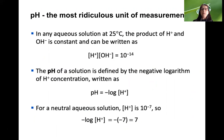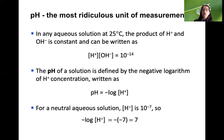The pH scale is the most ridiculous unit of measurement and it causes a lot of problems for students of science. In any aqueous solution at 25 degrees, the product of hydrogen ion concentration and hydroxyl ion concentration equals 10 to the negative 14. The pH of the solution is defined by the negative logarithm of hydrogen ion concentration: pH equals negative log of the concentration of hydrogen ions. This formula is on the AP biology formula sheet, so you don't need to memorize it — but you need to understand what it means.